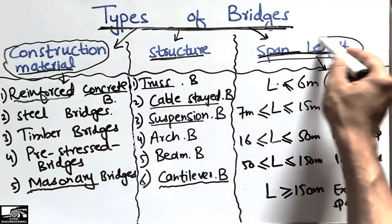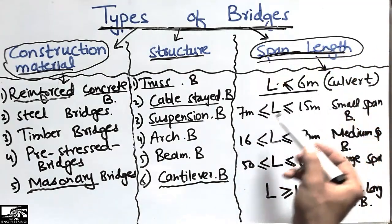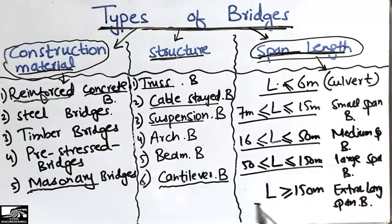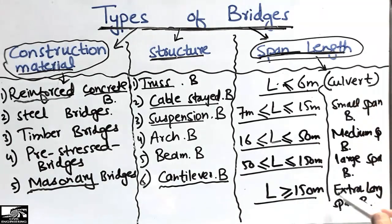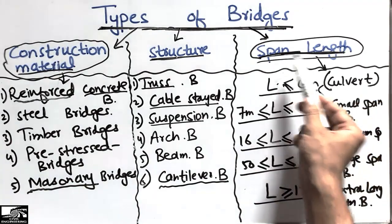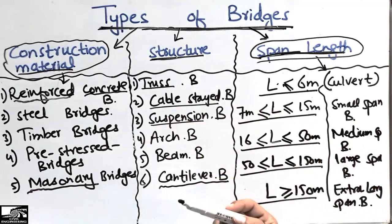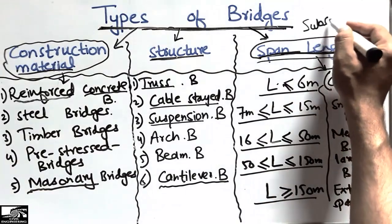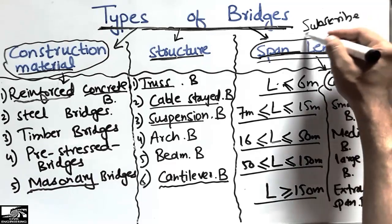So there are five categories of bridges under the span length classification: less than six meters, and then four further ranges. This was all about the types of bridges in detail. Don't forget to subscribe to our channel for daily civil engineering videos. Thank you for watching.